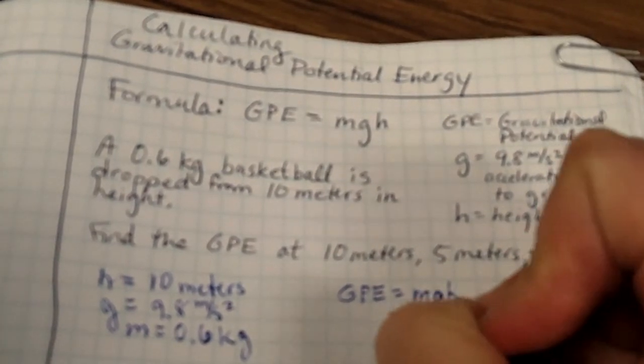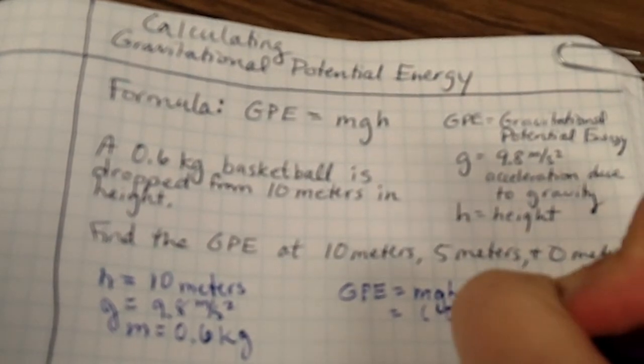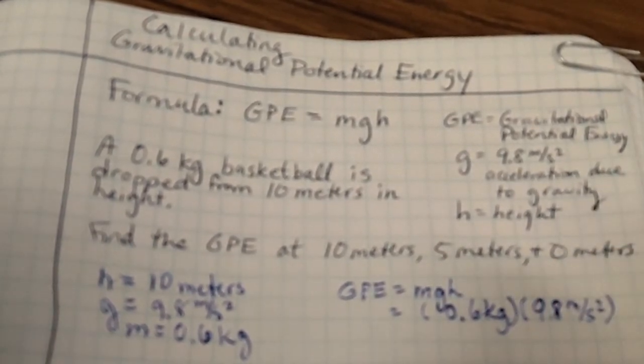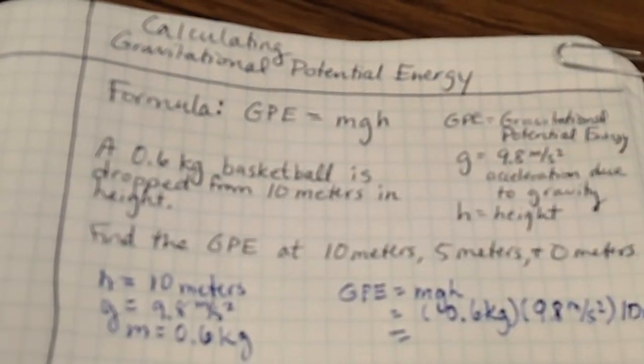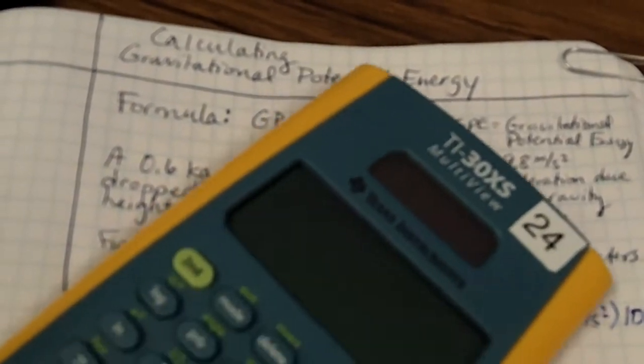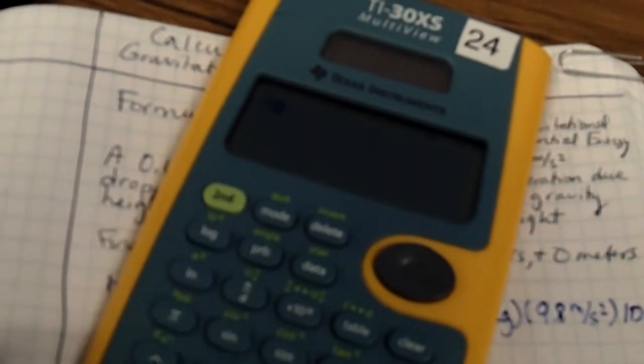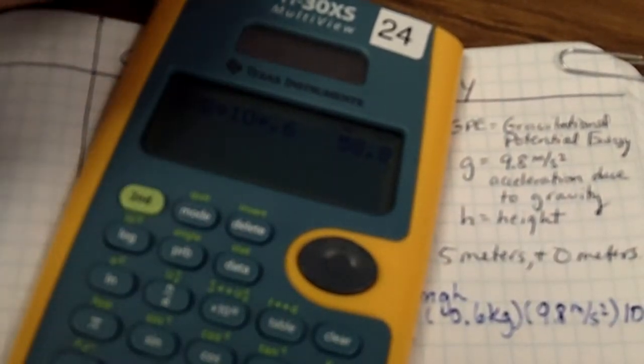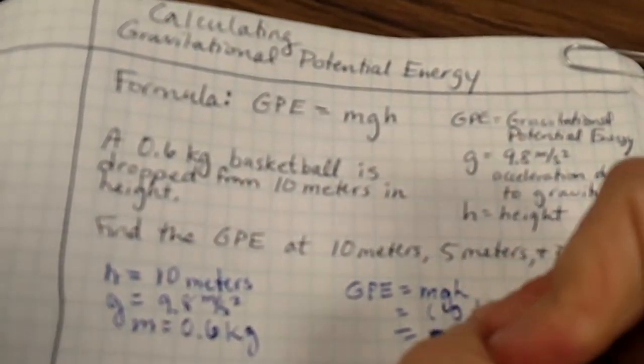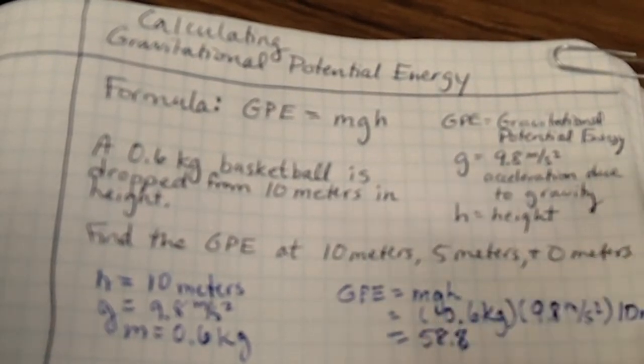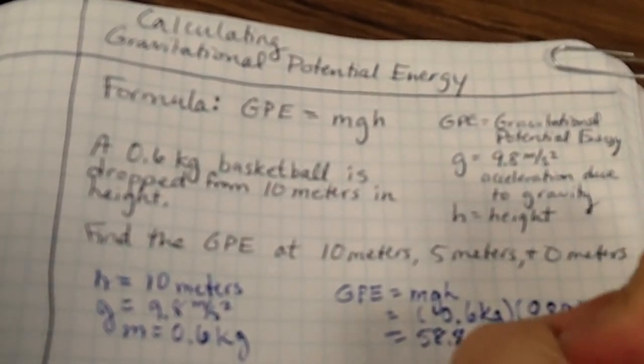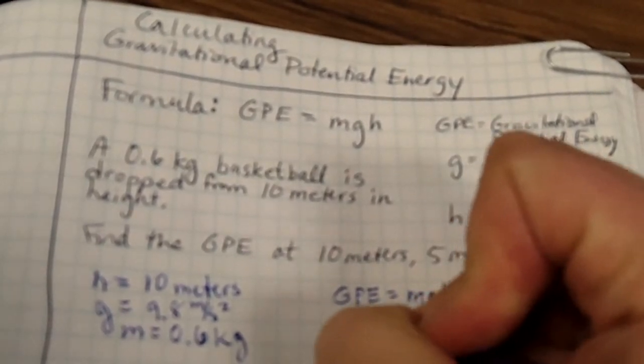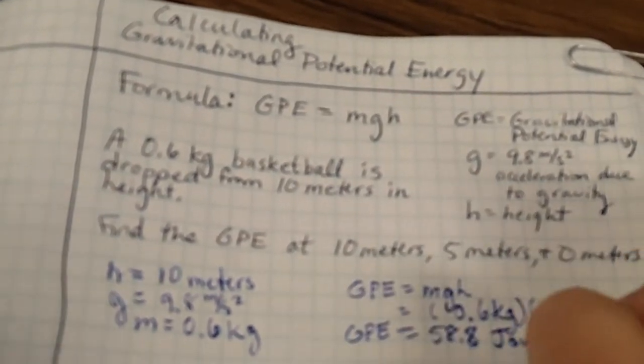Let's go ahead and plug in our numbers. So M, for M we have 0.6 kilograms. For G we have 9.8 meters per second squared. And for height we have 10 meters. So we're going to go ahead and punch that into our calculator. So take a look here. We've got 9.8 times 10 times 0.6. Our answer there is 58.8. So we have 58.8. And what this is going to end up being is a different kind of unit called a joule. So a joule is an energy unit. And we're just going to leave it at that for the moment. So our GPE is 58.8 joules when we're at 10 meters.